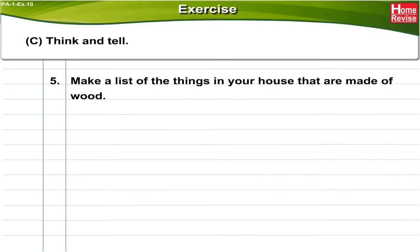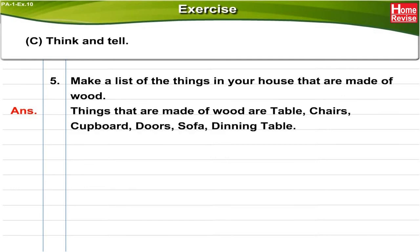Number 5: Make a list of the things in your house that are made of wood. Things made of wood include: table, chairs, cupboard, doors, sofa, and dining table.